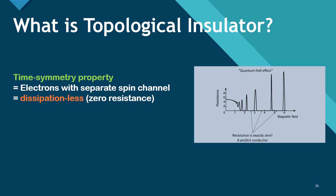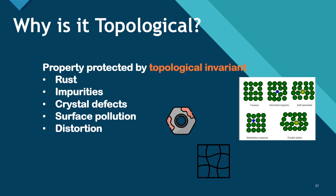So what is so topological about this topological insulator, you may ask? Well, this property is protected by topological invariance, meaning that as long as it holds the same topological properties — such as the same number of holes — the conductivity will always be the same, which is zero-resistant. Thus, they are immune to rust, impurities, crystal defects, surface pollution, and distortion.